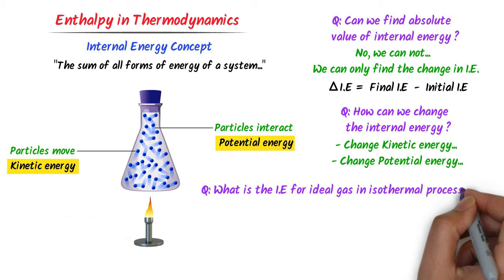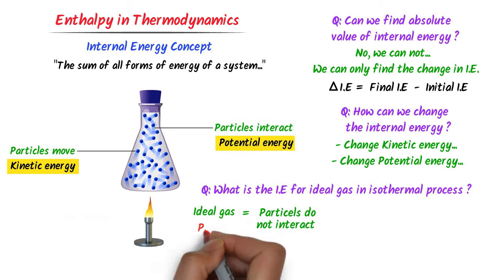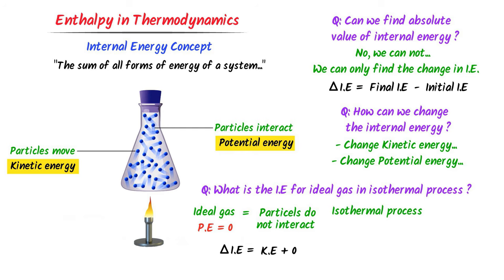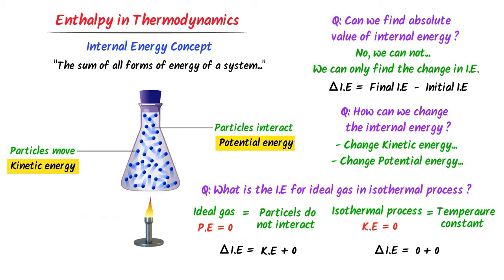What is the internal energy for an ideal gas in an isothermal process? In the case of an ideal gas, there is no interaction between particles, so potential energy for ideal gas particles is zero. In an isothermal process, temperature remains constant, and at constant temperature, kinetic energy change is zero. Therefore, internal energy equals zero plus zero — for an ideal gas in an isothermal process, internal energy is equal to zero.